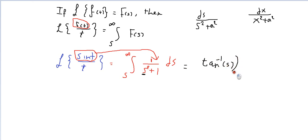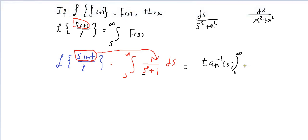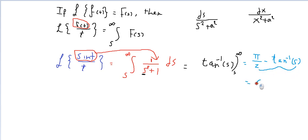Now apply the limits of integration from S to infinity. When you put infinity, arctan(∞) equals π/2. Minus when you put S, the function stays as arctan(S). So the result is π/2 minus arctan(S), which can also be written as cot⁻¹(S).